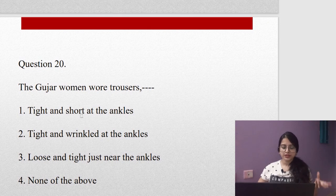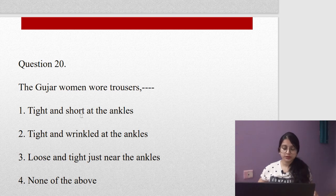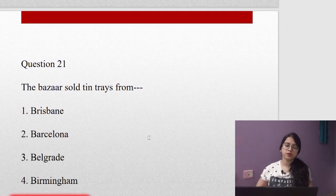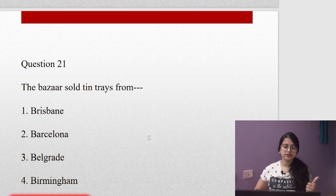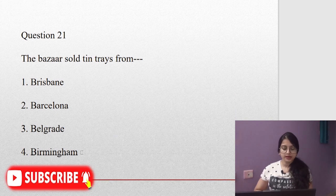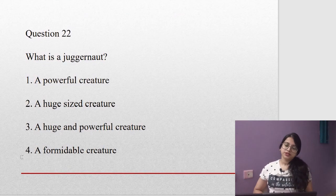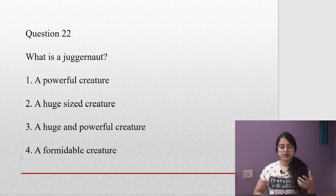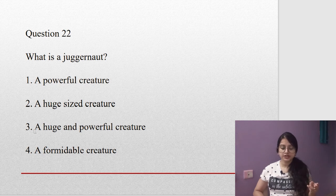Question twenty: The Gujar women wore trousers. What kind of trousers were they wearing? Tight and short at the ankles, tight and wrinkled at the ankles, loose and tight just near the ankles, or none of the above? It is tight and wrinkled at the ankles, option number two. Question twenty-one: The bazaar sold tin trays from Brisbane, Barcelona, Belgrade, or Worminghem? As you all know, it is going to be Worminghem. Question twenty-two: What is a juggernaut? A powerful creature, a huge size creature, or a huge and powerful creature? This has everything in both huge and powerful, so option number three is correct.